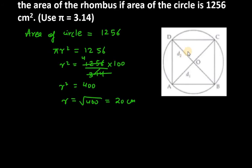Now, r is 20. If r is 20, then what will the measurement of diagonal 1 be? 20 plus 20, it is 40. D₁ is 40 and D₂ is 40 as well.